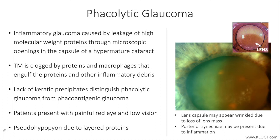This is the classic image seen with phacolytic glaucoma of a hypermature cataract with the lens actually sinking within the capsule and cortical and proteinaceous material on the superior part. In my experience, we typically see cataracts that look like this where the cataract is mature. You don't necessarily see the nucleus sinking within the capsule, but you can see some wrinkling on the anterior part of the capsule.